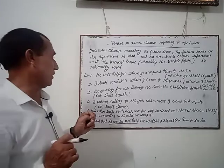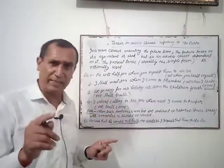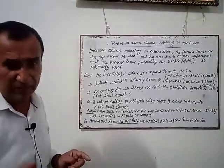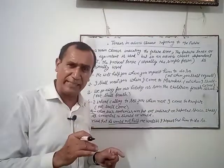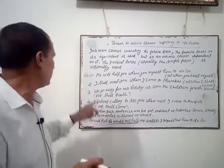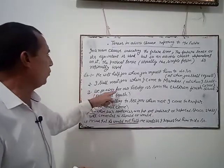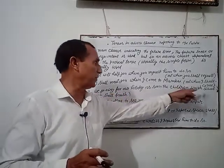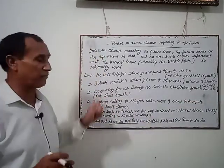In summary: when one clause is in future tense, the other will be in present tense. If one clause is in present tense, the other will also be in present tense. For example: 'We go away for our holiday as soon as the children finish school' — not 'shall finish.'